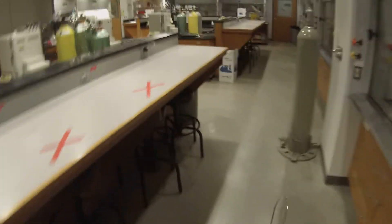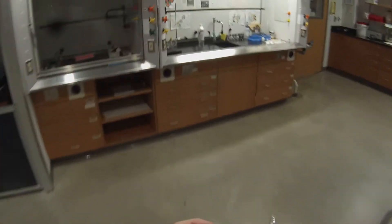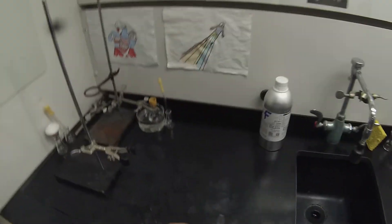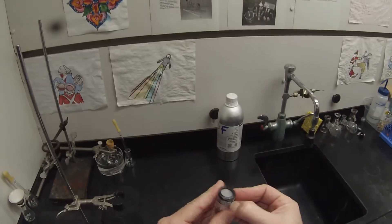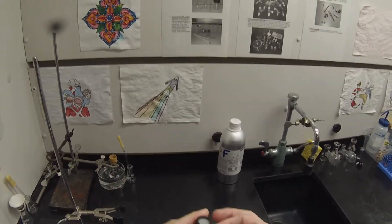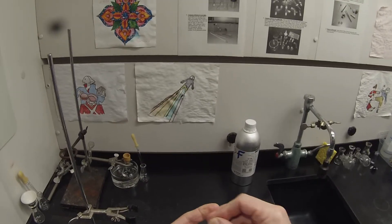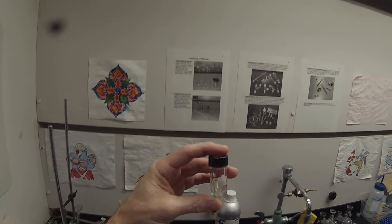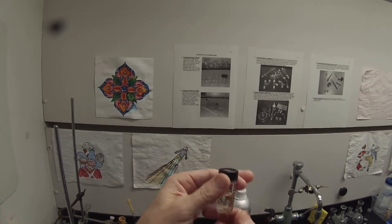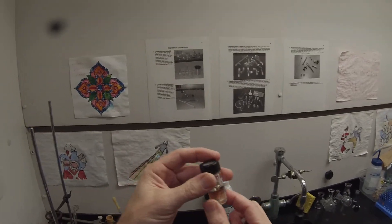So we'll take these back with us and let this warm up. We're going to be setting up a distillation to purify the ester, get it away from any of the residual acetic acid and alcohol that might be in there, mostly alcohol because we quenched the acetic acid.